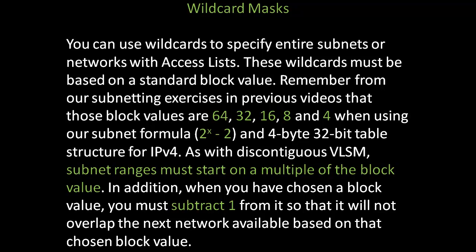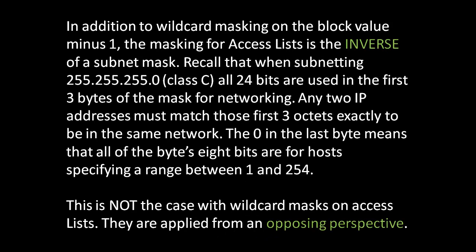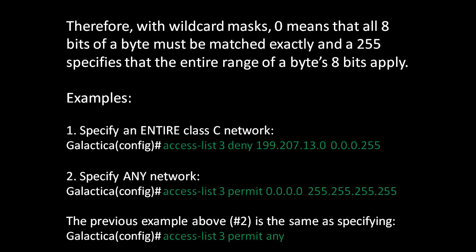Remember, the block is the base multiple. In addition to wildcard masking on the block value minus 1, the masking for access lists is the inverse of a subnet mask. Recall that when subnetting 255.255.255.0, a class C address, all 24 bits are used in the first 3 bytes of the mask for networking. Any two IP addresses must match those first 3 octets exactly to be in the same network. The zero in the last byte means all 8 bits are for hosts, specifying a range between 1 and 254. This is not the case with wildcard masks on access lists — they are applied from an opposing perspective. Therefore, with wildcard masks, zero means all 8 bits of a byte must be matched exactly, and 255 specifies that the entire range of a byte's 8 bits apply.